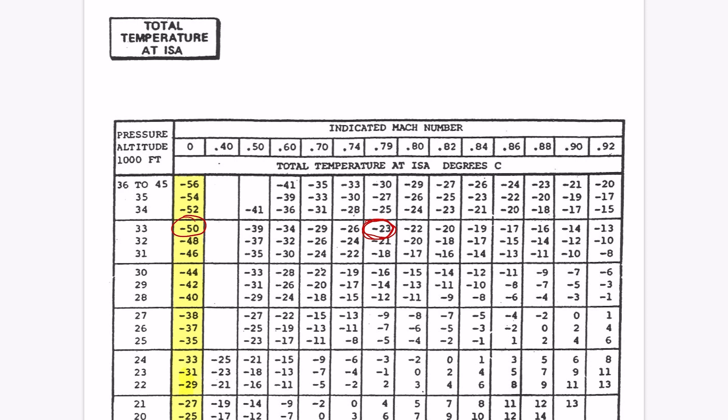Using this ISA deviation we can also adjust the outside temperature if need be. Let's do the first example in the textbook together. We're flying at flight level 280 at Mach 0.79 and the TAT gauge is indicating minus 22 degrees. Moving across on the table, on an ISA day we'd expect to see minus 12 degrees, but instead we're showing minus 22 degrees. This means we're 10 degrees colder than ISA. On an ISA day the outside air temperature is minus 40 degrees, so with an ISA deviation of minus 10, we now expect the outside air temperature to be minus 50.